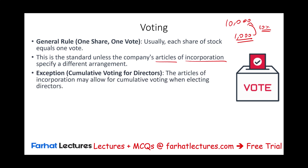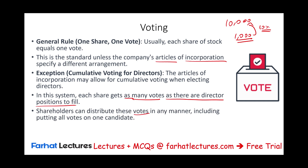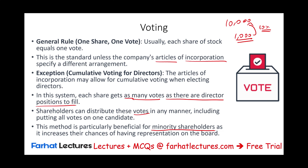One alternative arrangement is cumulative voting for directors. The articles of incorporation may allow this when voting for directors. In this system, each share gets as many votes as there are director positions to fill. Shareholders can distribute these votes in any manner, including putting all votes on one candidate. This method benefits minority shareholders by increasing their chances of board representation. For example, if you have 100 shares and there are five director positions, you have 500 votes and can allocate all 500 to one candidate.